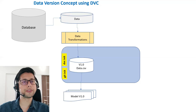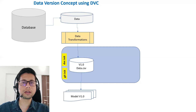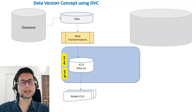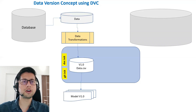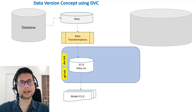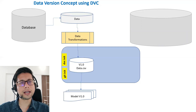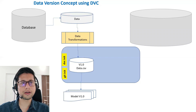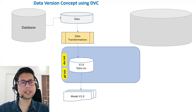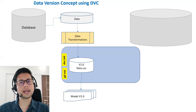DVC works similarly to git, but the challenge with git is that we cannot store very large data files — files with huge amounts of data in GBs or more. That's where DVC comes to our rescue. What it does is integrate a backend database with your working directory where it stores the actual files, and with respect to each file it generates certain metadata — essentially pointers — which help us understand which version of data contains what.